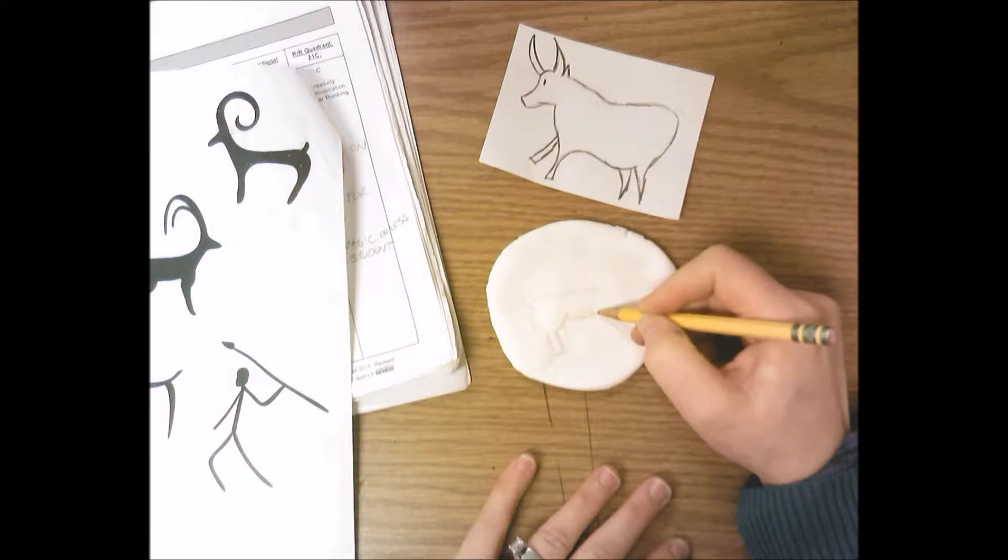Remember that this is cave art, so I want animals. You can do a couple of people, but I want you to definitely have an animal and some symbols on there too. You need to fill up your model magic piece. I've had some people draw a tiny little animal in the middle and then they don't add anything else, and it's just all this blank space.